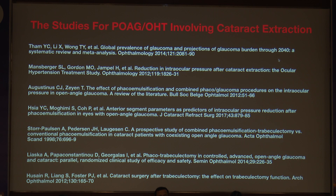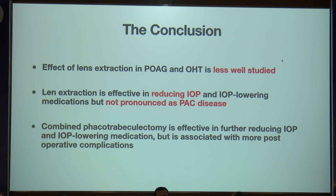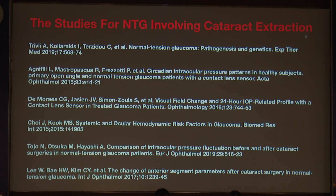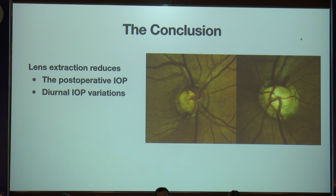In open angle glaucoma, lens extraction is less well studied, but IOP can still reduce, though the reduction is not as pronounced as in primary angle closure disease. Combined phaco-trabeculectomy is also helpful in reducing IOP further but will have more complications and may need more interventions. In ocular hypertensives, IOP can reduce by 4.1 mmHg — a drop of 16.5% — remaining lower for more than 36 months. In NTG, post-operative IOP reduced and diurnal IOP fluctuations also reduced.